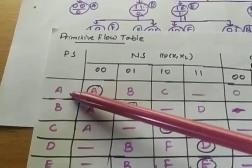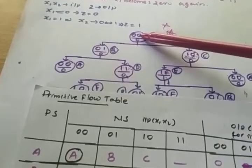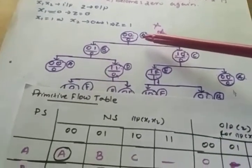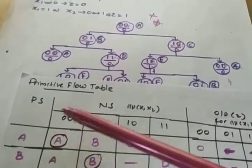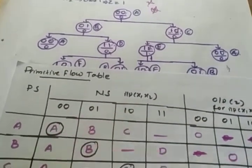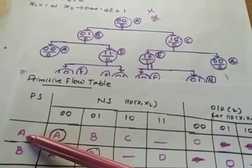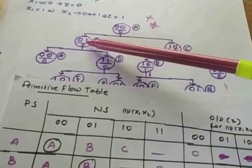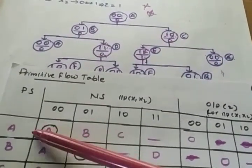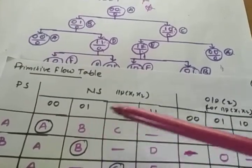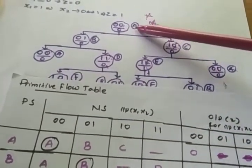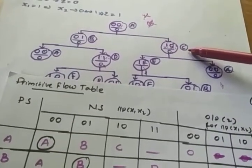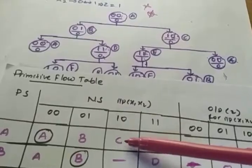Now check for present state a: with 0,0 input, what is the next state? Present state is a, 0,0 is the input — next state is a only. So present state a, 0,0 input, next state is a. Now present state a with 0,1 input: next state is b only. For 1,0 combination, present state a, next state is c only. So for 1,0 combination, next state is c.